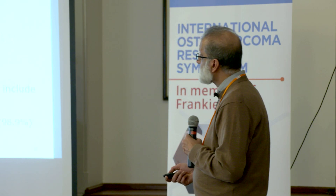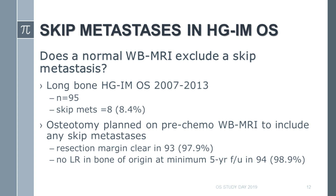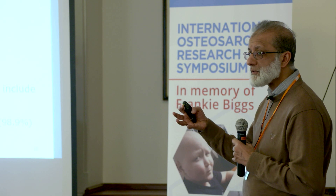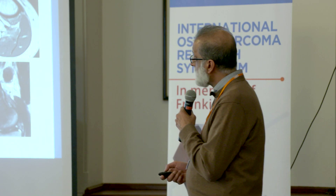We looked at 95 patients with major whole bone osteosarcoma up to 2013, giving a minimum five-year follow-up. About just over 8% had skip metastases. The osteotomy was planned on the pre-chemotherapy whole bone MRI, which included any skip lesion. We showed that at five-year minimum follow-up, the resection margin was clear in almost 98% of cases and there was no local recurrence in the bone of origin in almost 99% of cases. So the whole bone coronal T1-weighted sequence appears to be a safe and reliable technique for planning the osteotomy site.